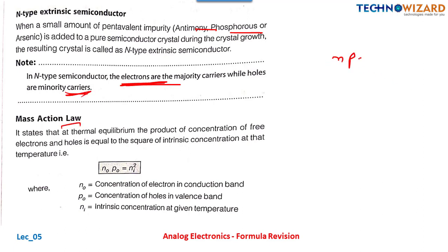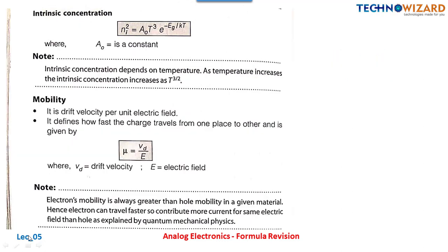What is the mass action law? It states that n × p = ni², where n is the number of electrons, p is the number of holes in the valence band, and ni is the intrinsic concentration at a given temperature. This is known as the mass action law.